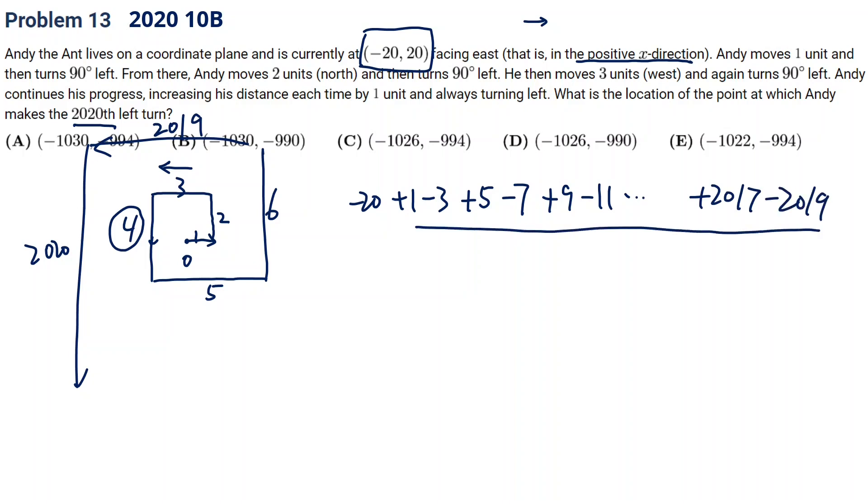So the previous step is 2019, going left. So we got actually plus 2017, minus 2019. So this calculation we can do is negative 20 plus... So this is actually negative 2.